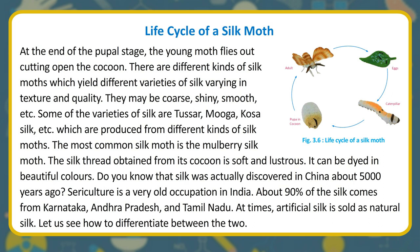There are different kinds of silk moths which yield different varieties of silk varying in texture and quality — they may be coarse, shiny, smooth, etc. Some varieties are tussar, munga, and kosa silk, produced from different kinds of silk moths. The most common silk moth is the mulberry silk moth. The silk thread obtained from its cocoon is soft, lustrous, and can be dyed in beautiful colors. Silk was discovered in China about 5,000 years ago. Sericulture is a very old occupation in India — about 90 percent of the silk comes from Karnataka, Andhra Pradesh, and Tamil Nadu.